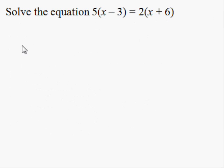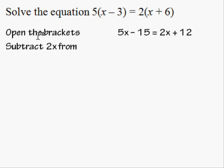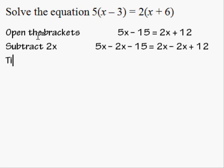Solve the equation 5x minus 3 equals 2. First, open the brackets. Now subtract 2x from both sides. Tidy up.